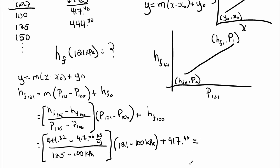Handy dandy calculator. Just so you guys know, I do my calculations in reverse polar notation. It's an old HP 48 calculator. That's why you'll hear me say numbers in a weird way. It just allows me to work with a stack. 444.32 minus 417.46, 125, 100, minus divide, 121, 100, minus times 417.46. So we end up with a number of 440.02 kilojoules per kilogram.